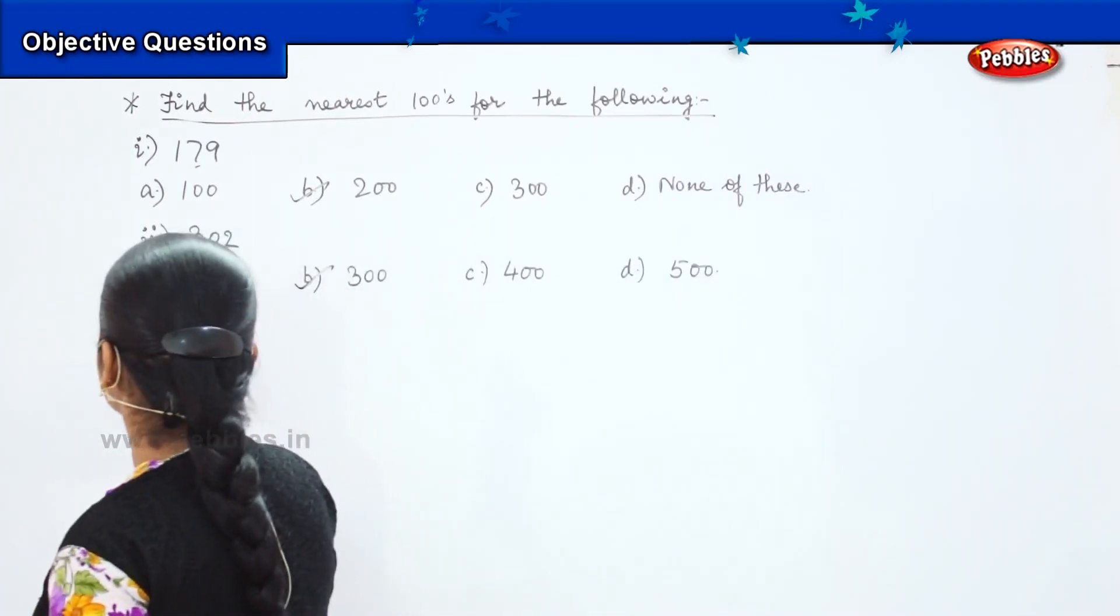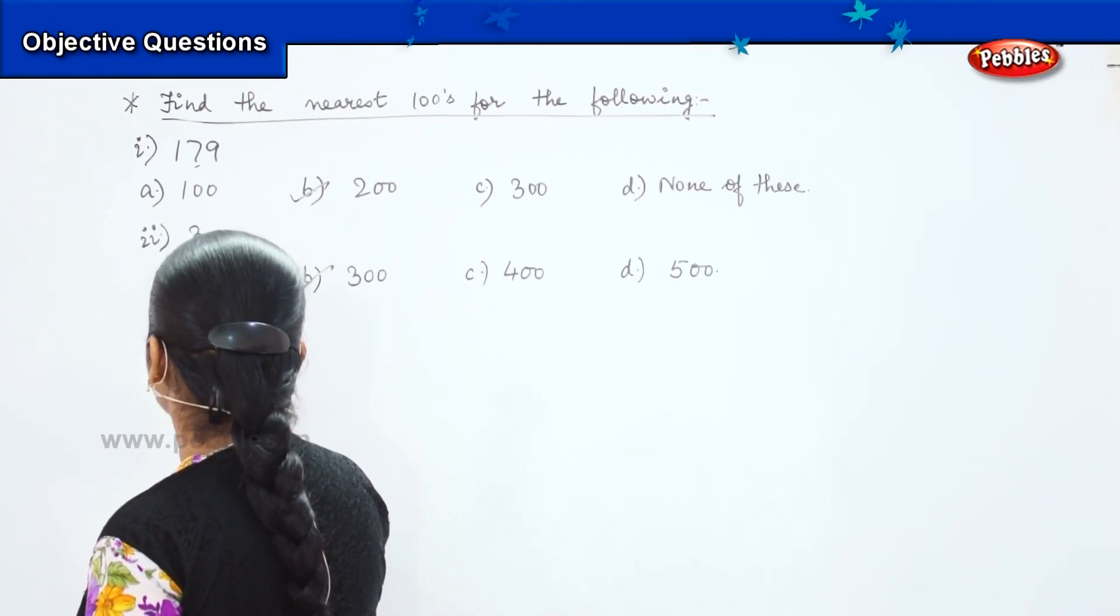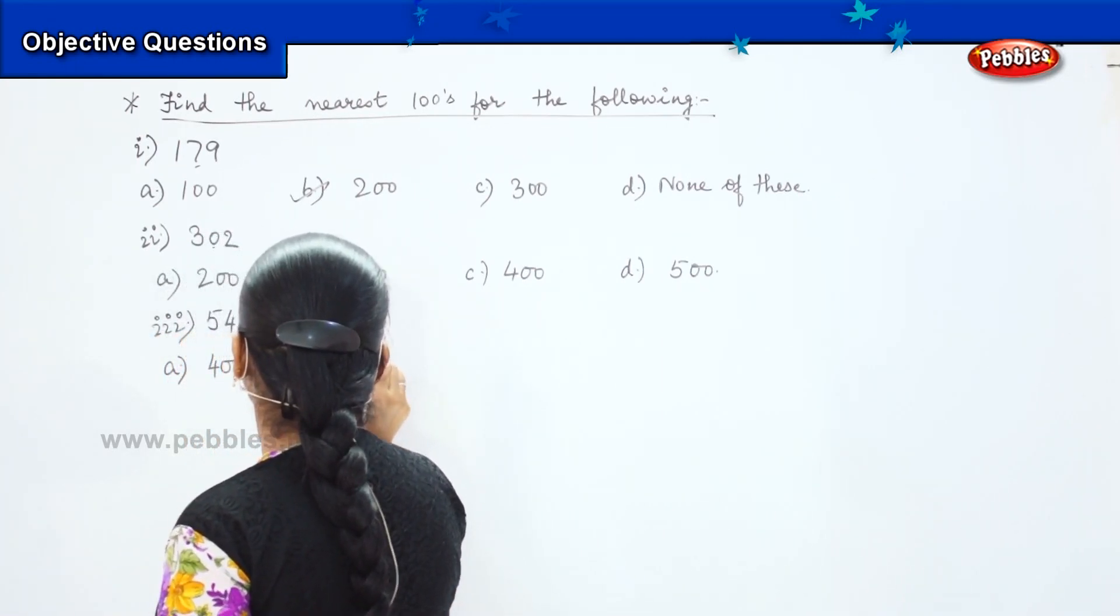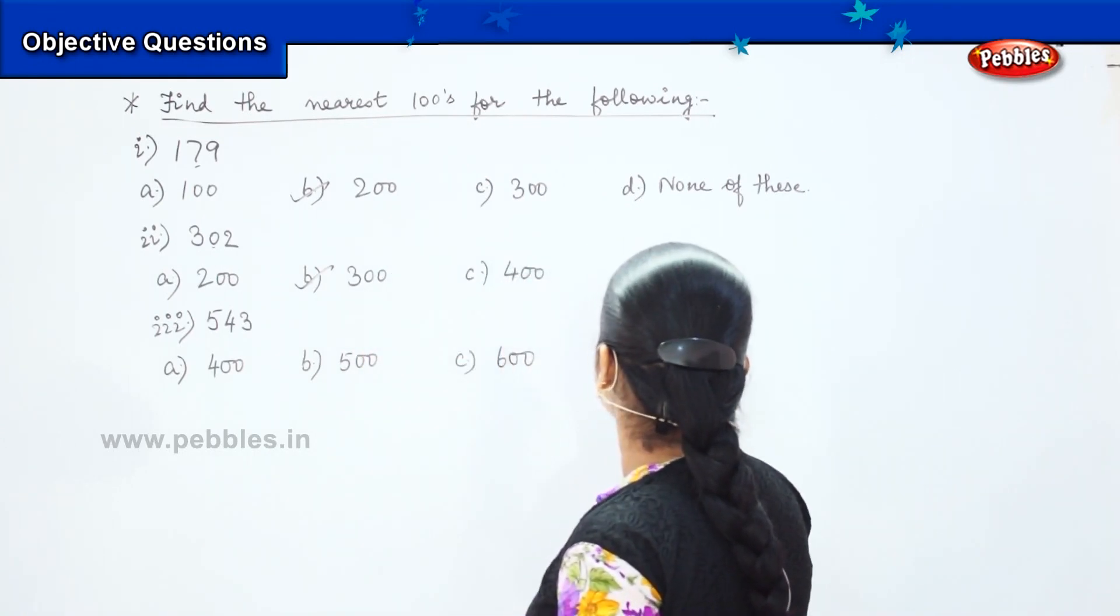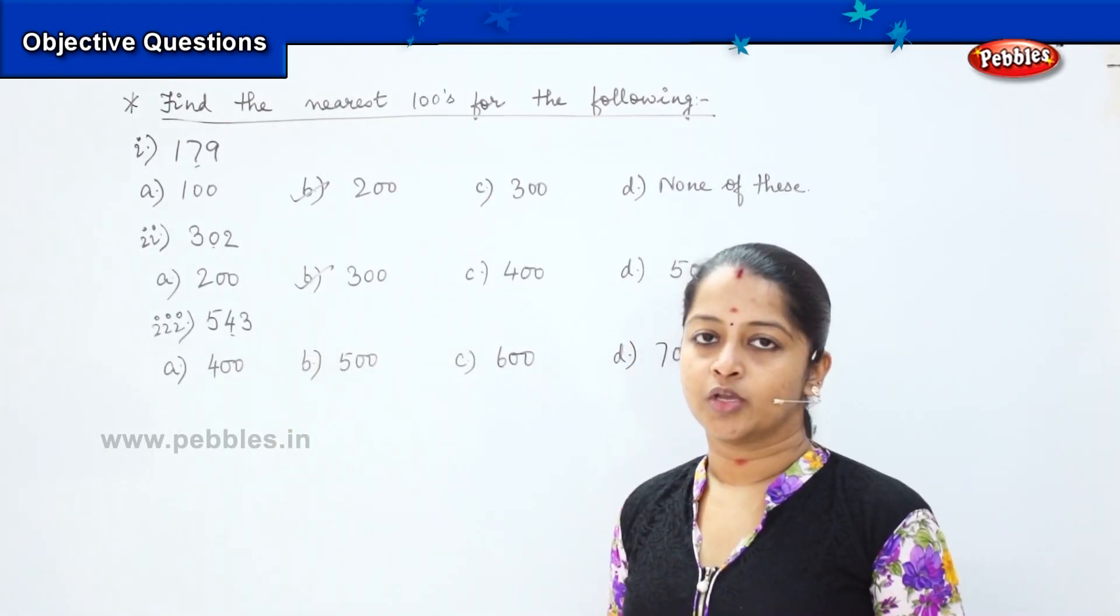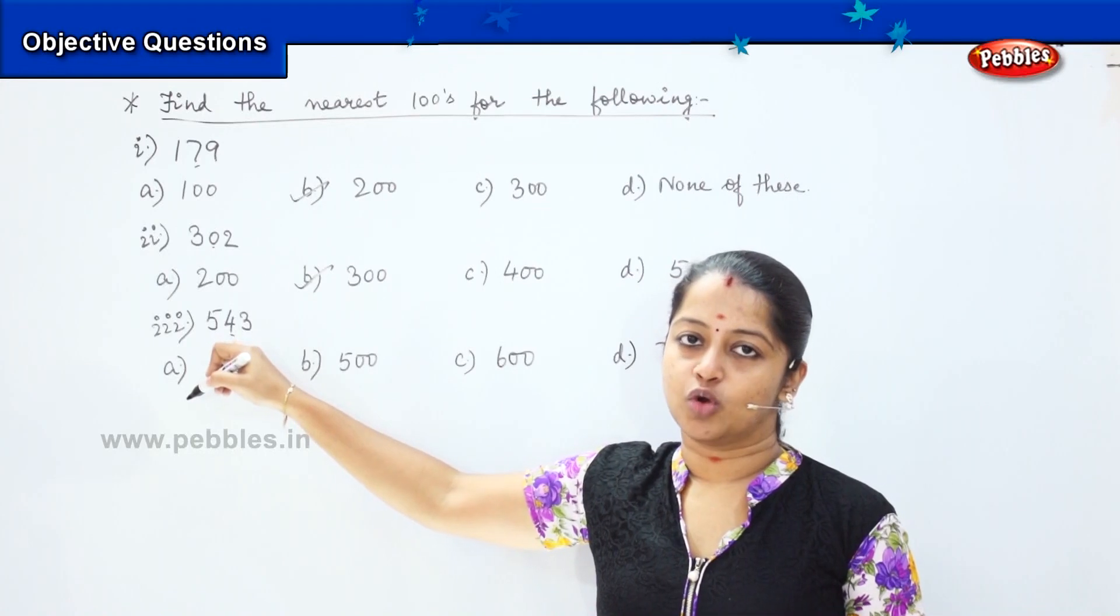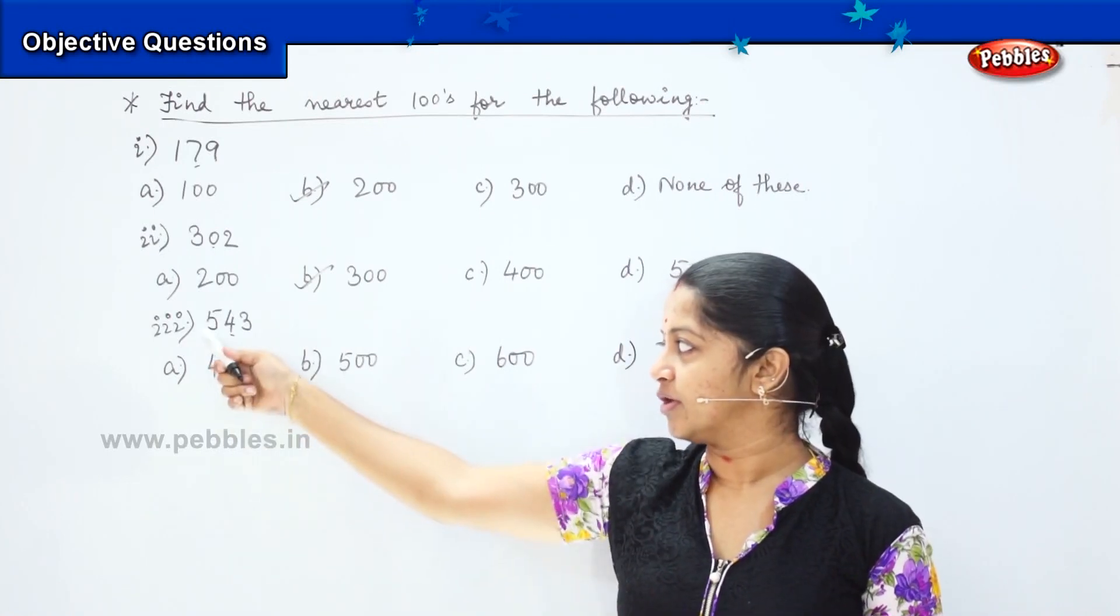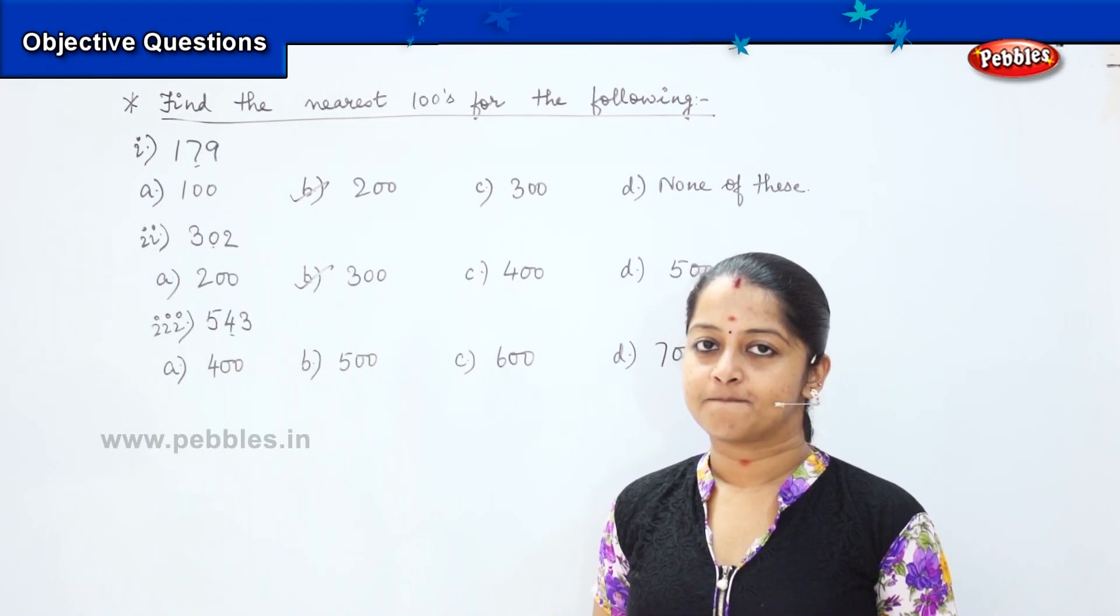Here is my next question. You need to tell me what is the nearest hundreds for 543 and my options are 400, 500, 600 and 700. Check the tens value. What number is this? It is 4. Is it above 5 or below 5? Good. It is below 5. What you need to do? You need to convert it into the preceding hundreds value. What will be for this value then? It should be 500.